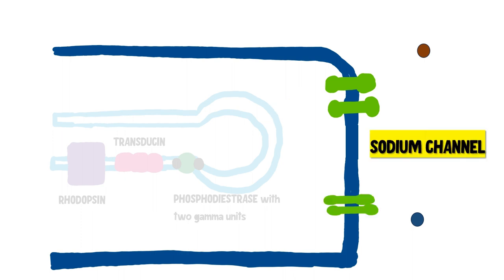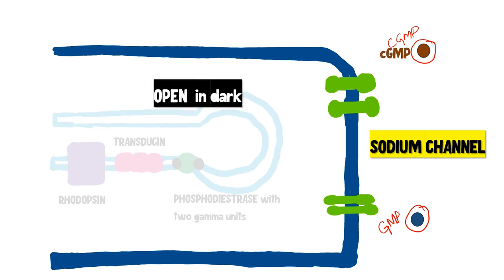Sodium channels can be either open or closed. The sodium channels open in the presence of cyclic GMP — represented in brown — and close when normal GMP — represented in blue — is present around the channel.